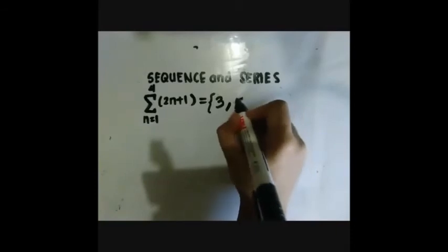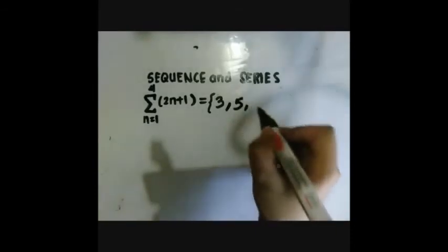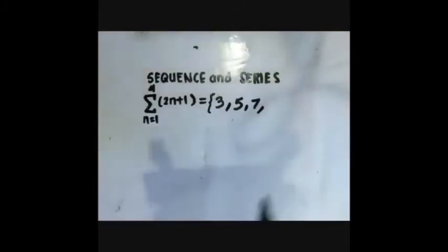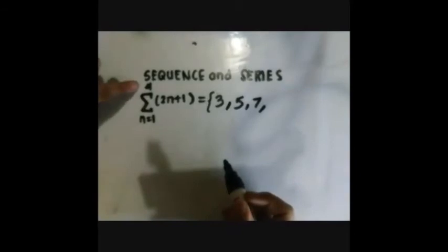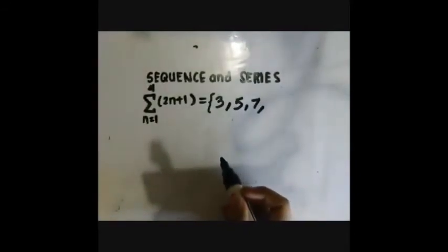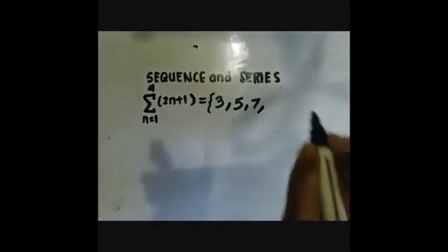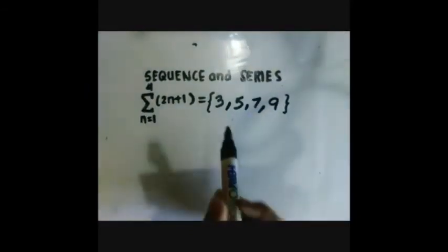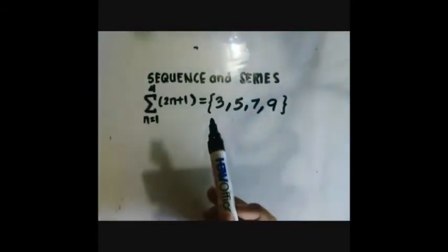Next, 2 times 2 plus 1 equals 5. Next, 2 times 3 equals 6 plus 1, we now have 7. It says that we end at 4, so 2 times 4 plus 1 gives us 9.